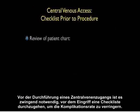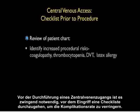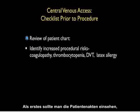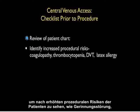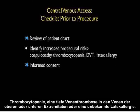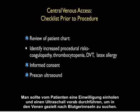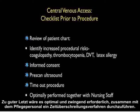Before performing central venous access, it is mandatory to perform a checklist prior to the procedure. This includes reviewing the patient chart for increased procedural risks such as coagulopathy, thrombocytopenia, presence of a DVT in the upper or lower extremity veins, or a known latex allergy. One should obtain informed consent, perform a pre-scan ultrasound to look for clot in the targeted veins, and perform a timeout procedure together with the nursing staff.